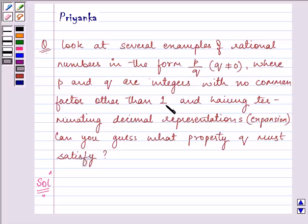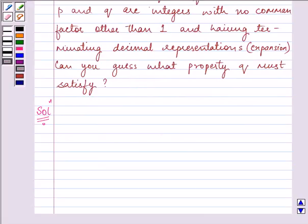Like it can be 9 by 25 as one of the examples. The second example can be 33 by 8. This satisfies that these both are integers having no other common factor other than 1.